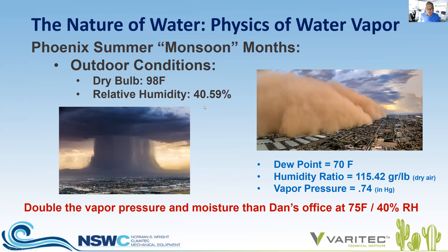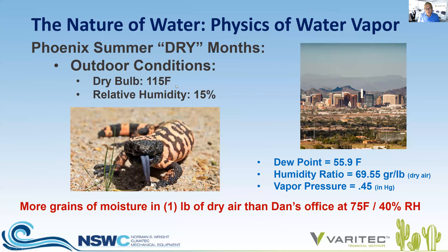Consequently, on a monsoon day, we'll find moisture from the outdoors trying to flood into my office — which, for my prints, is actually a good thing. However, in what we refer to as our Phoenix summer dry months at a design temperature of 115 degrees ambient and a relative humidity of 15%, the dew point outdoors is 55.9 degrees, the humidity ratio is 69.55 grains per pound, and the vapor pressure is 0.45. So in our dry conditions, I don't have a humidity challenge maintaining my room at 75 degrees and 40% RH, because the vapor pressure is only 0.10 greater than my studio's vapor pressure.